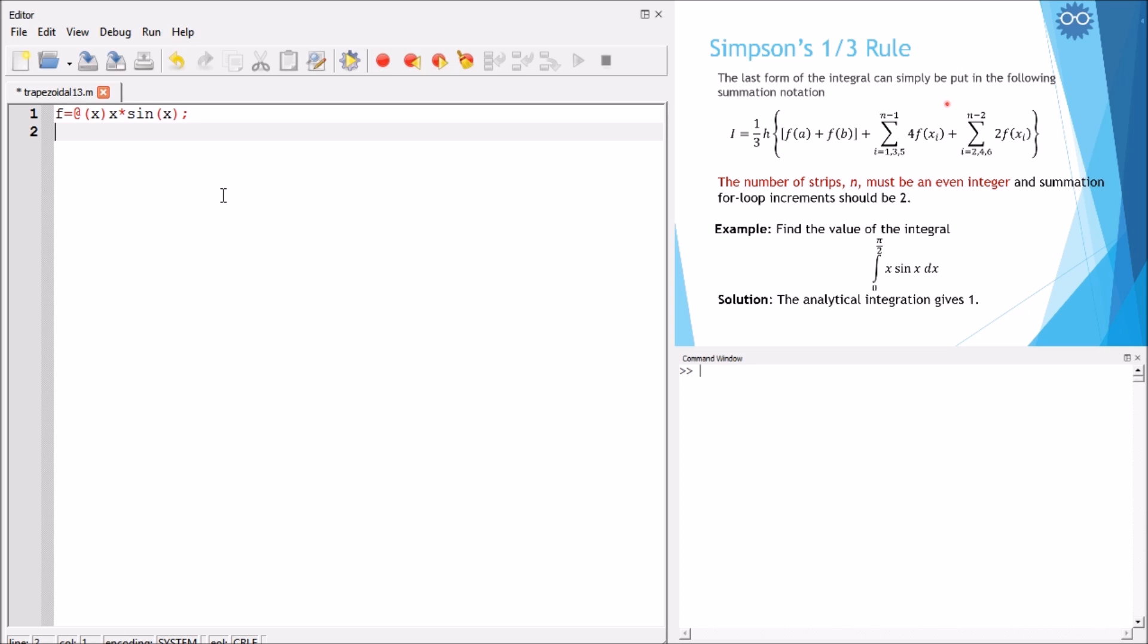We define the lower limit of integration. We define the upper limit of integration. We define the number of division. It should be even, so we can select, for example, number 18 divisions. We can compute the value of h, which is equal to span of the domain, divided by the number of divisions. We can start our summation by the first two values, because when you go to the formula, you see that we have the two values. We can start with summing them. So, f of a plus f of b.